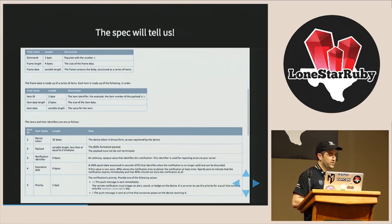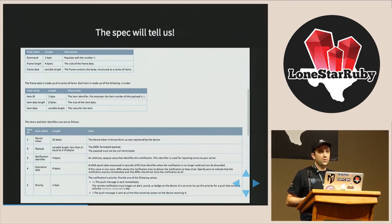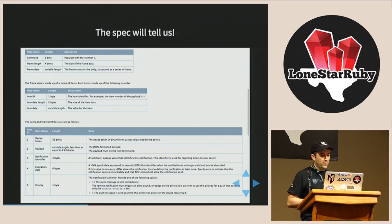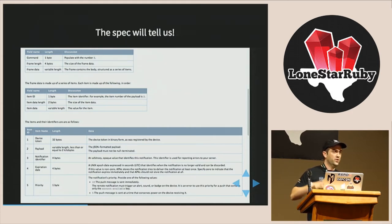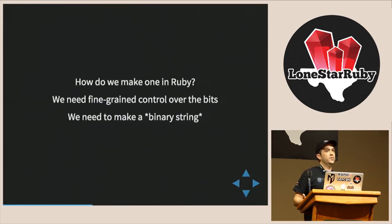The APN spec has a table of what those pieces should be. The first 32 bytes are the iOS device identifier, your unique string put on at the factory. Then there's up to 2K of JSON payload, followed by four bytes representing an arbitrary notification ID so Apple can bounce failures back to your server. After that, four bytes represent a date, then a byte for priority. Each piece enumerated in the spec gets pushed into a structured piece of binary data. So now we know we can take a spec and construct a chunk of binary data that has meaning on both sides. How do we do that in Ruby?